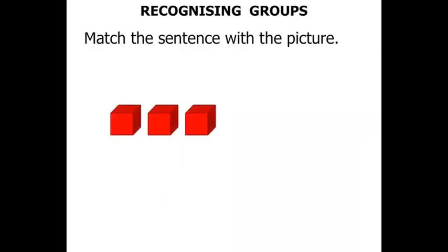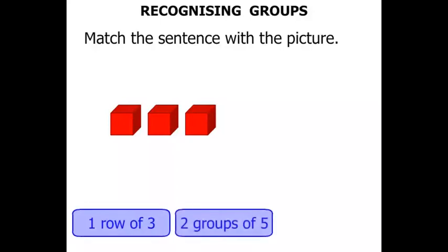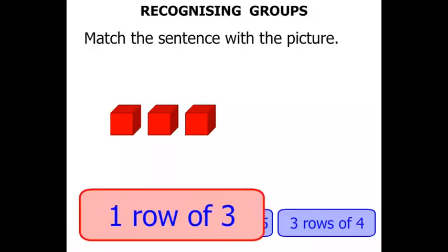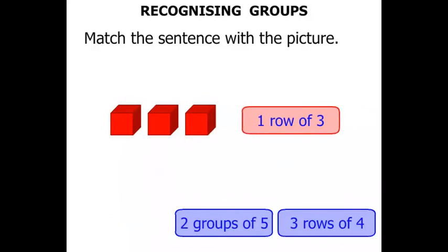Now this next one. Do we have one row of three? Or do we have two groups of five? Or do we have three rows of four? What do you think we've got there? Well, simply we have one row of three, because there are three in the row.